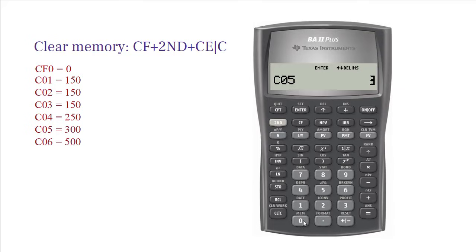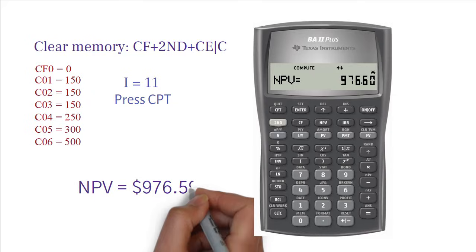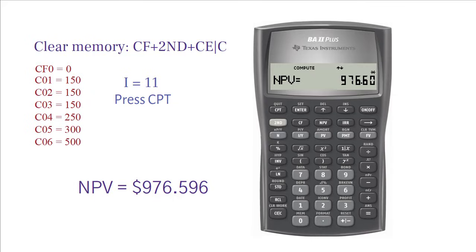Now, it's time to enter the discount rate of 11%. Press NPV. It is asking for I or interest rate. Press 11 and then press Enter. Press down arrow once. When your calculator screen is showing NPV, press Compute or CPT. So, you get the present value of this uneven cash flows equal 976.596.